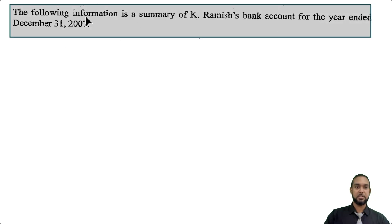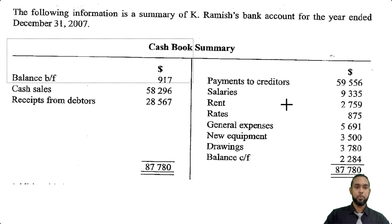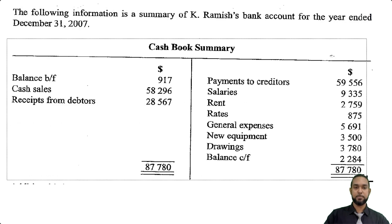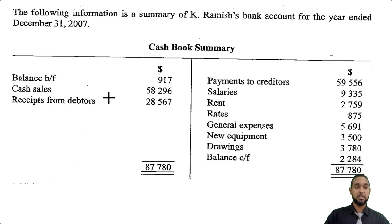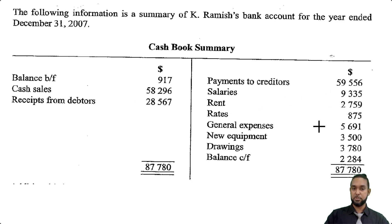They tell us that the following information is a summary of K. Ramesh's bank account for the year ended December 31st, 2007. So we have a cash book summary. We have balance brought forward: 917. We have cash sales, receipts from debtors on the credit side, payments to creditors, salaries, rent, rates, general expenses, new equipment, drawings, and a balance carried forward.